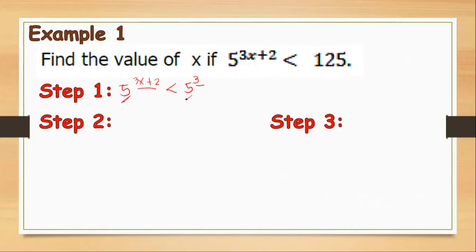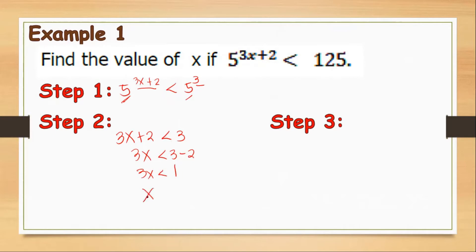Now we express the inequality of exponents. Our base is 5, which is greater than 1, so we copy the inequality sign: 3x + 2 < 3. Then solve: 3x < 3 − 2, so 3x < 1. Dividing both sides by 3, x < 1/3. The solution set is from negative infinity to 1/3, not including 1/3. We can use values like 0, −1, −2, and so on.